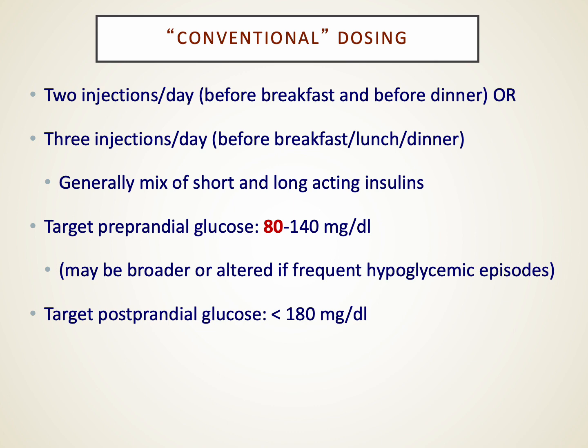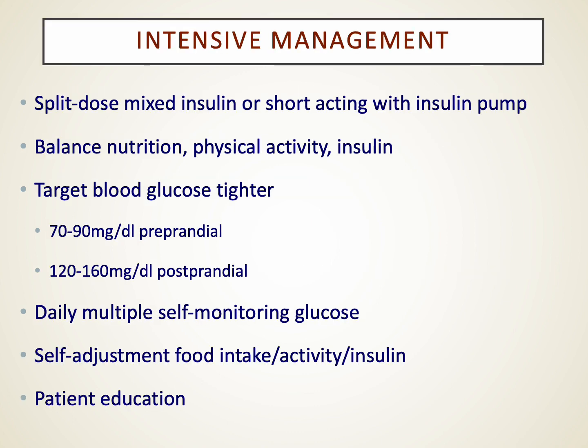Types of insulin dosing: conventional dosing is two or three injections a day — typically with breakfast and dinner, or with breakfast, lunch, and dinner — in a combination of short- and long-acting insulin. Routinely, we give short-acting insulin doses around mealtimes and a long-acting basal insulin once a day to overall control glycemic levels throughout the day. Intensive management may involve much tighter control.